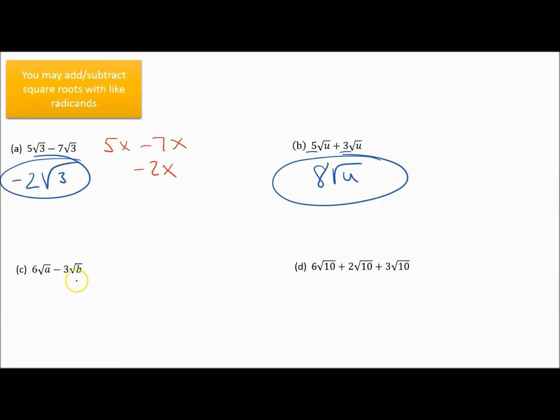Now look at this next problem: I've got a square root of a and a square root of b. Those are not like radicands, so what do you do? Nothing — this is completely simplified. You can't do anything else with that.